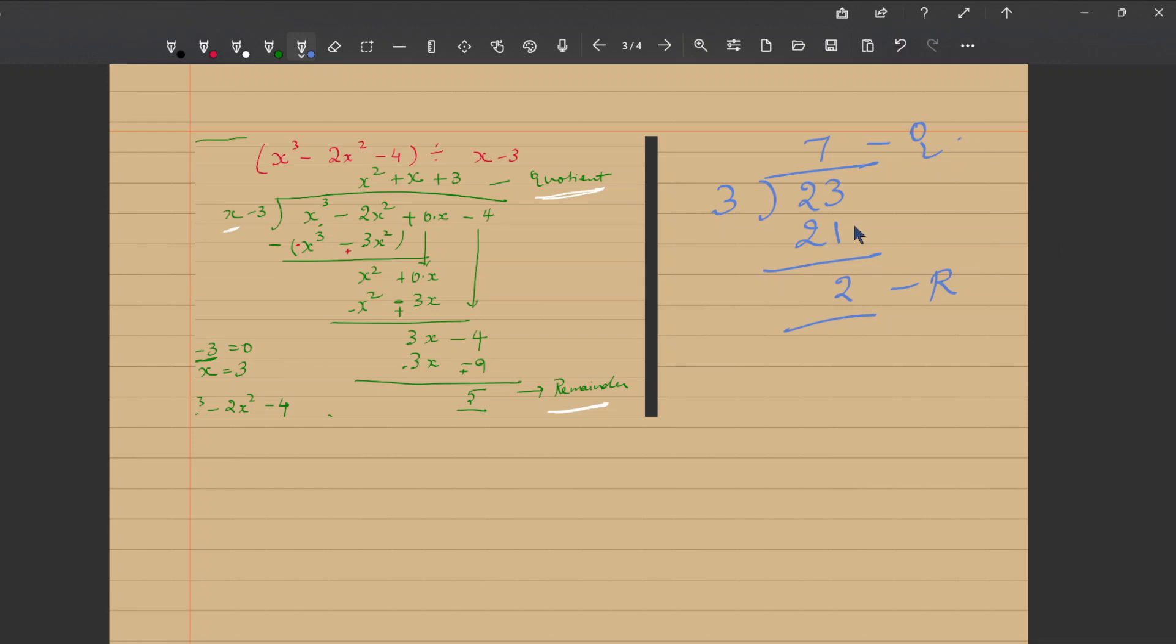Now I can write the division fact as 23 is equal to the product of 7 and 3 plus the reminder, where 7 is your quotient and 2 is your reminder. This is a general fact which all of us know for numerical division. This is called the division fact also.